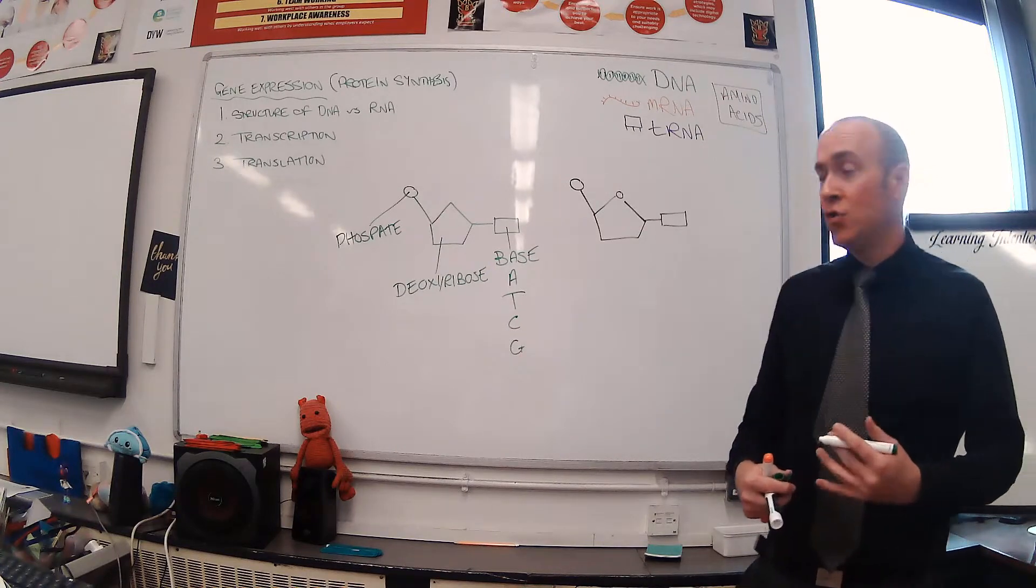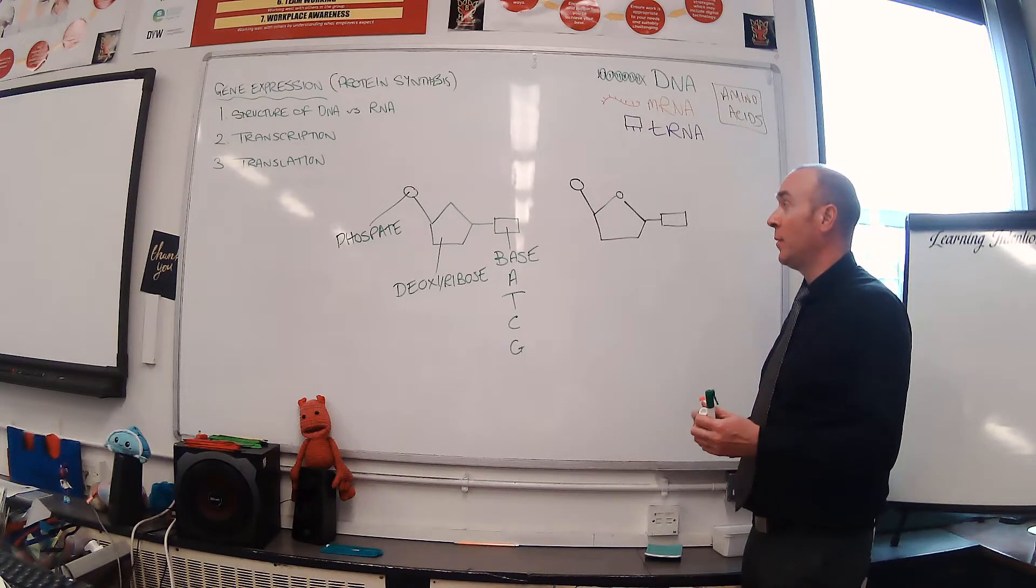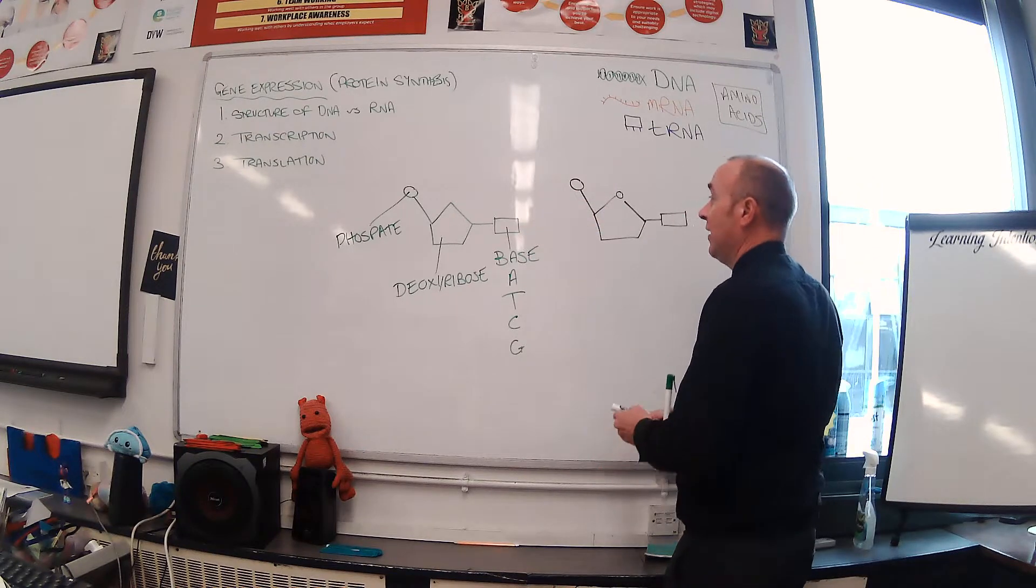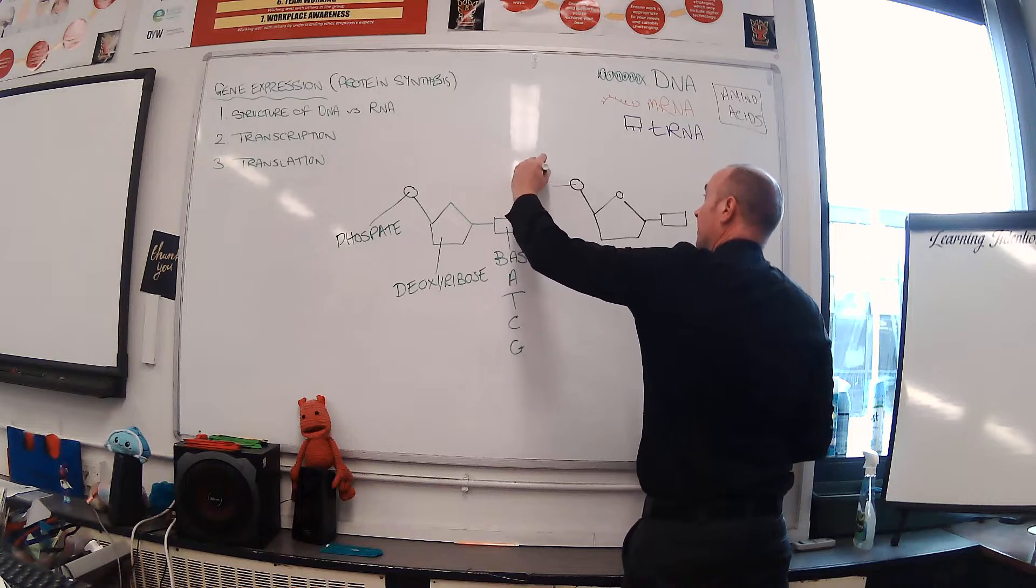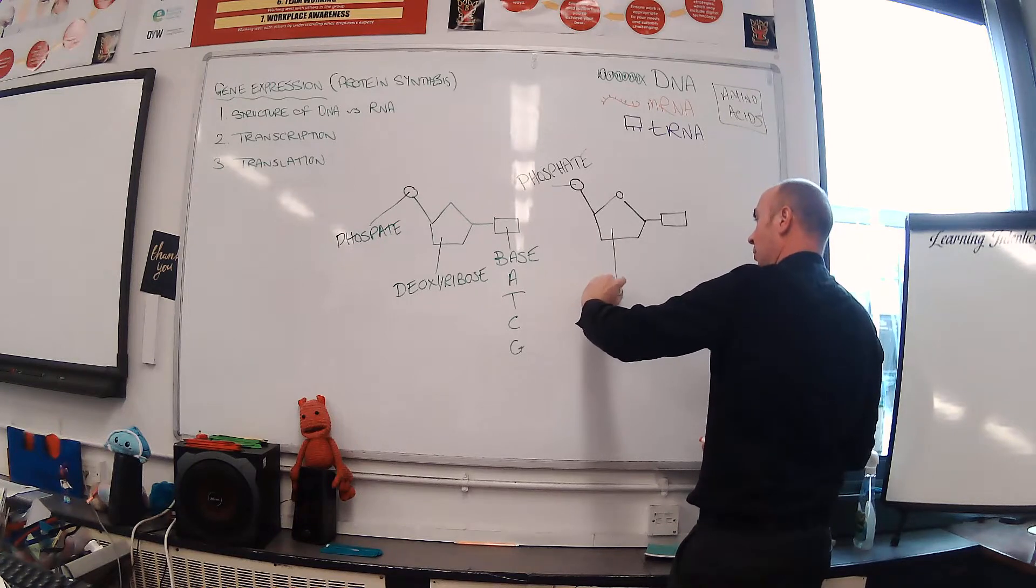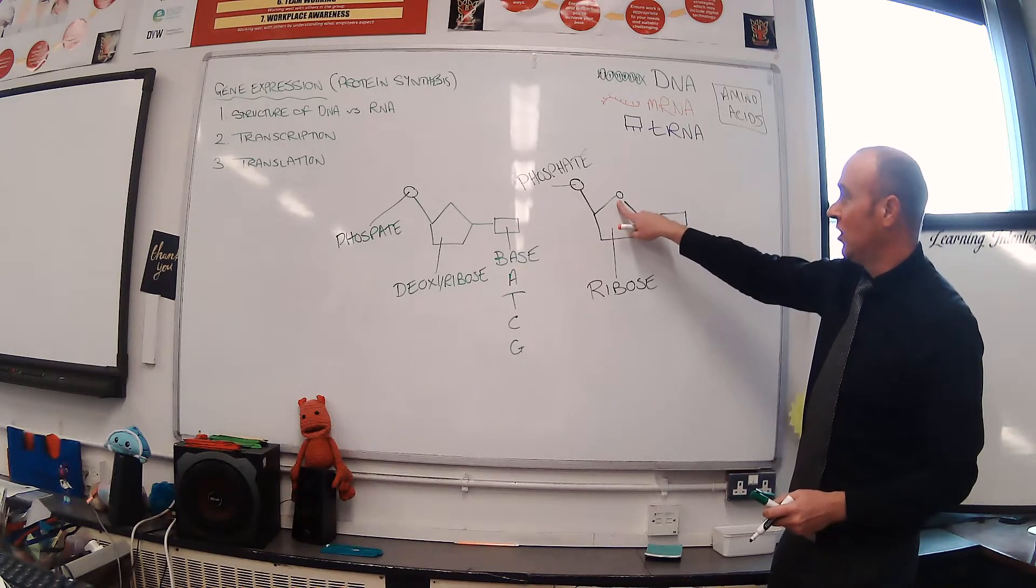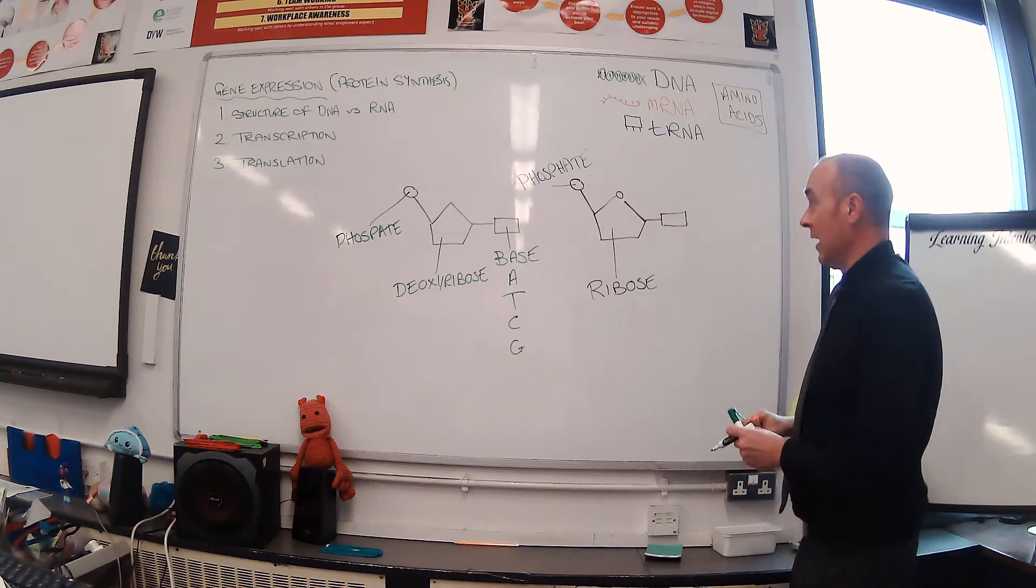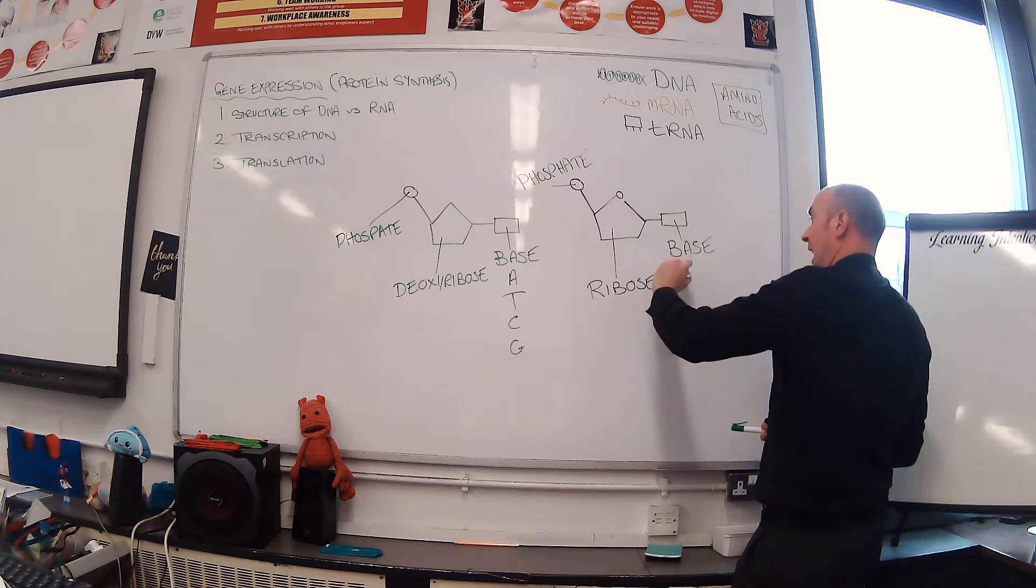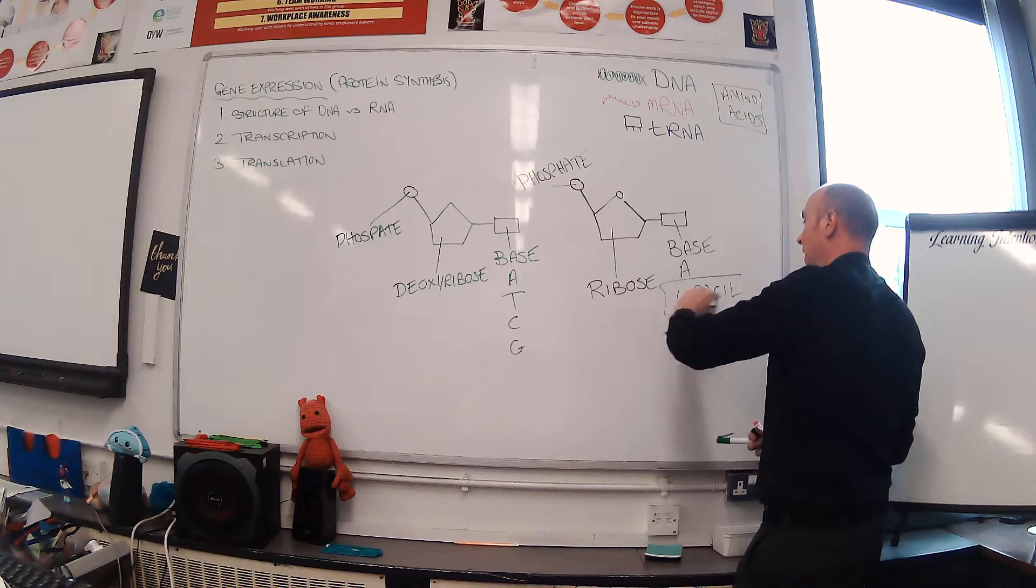RNA is another type of nucleic acid and it has several structural differences. Firstly, phosphate is the same, but instead of being attached to a deoxyribose sugar, RNA is attached to a ribose sugar. You'll see the difference structurally as the presence of oxygen on a ribose molecule, and then we also have a base.